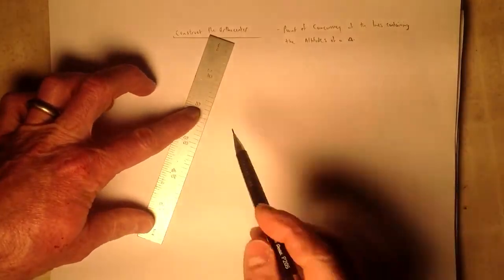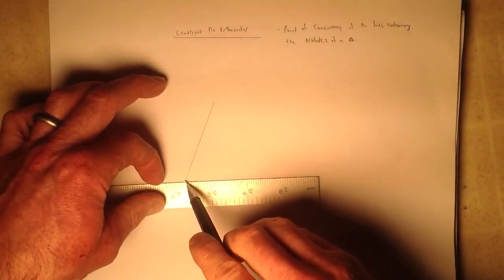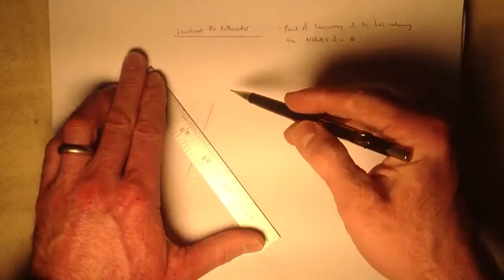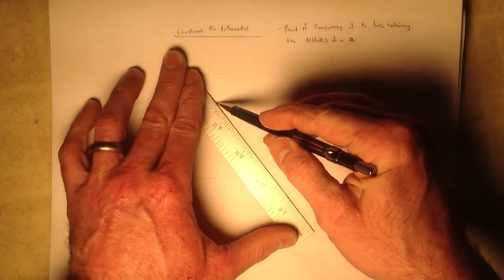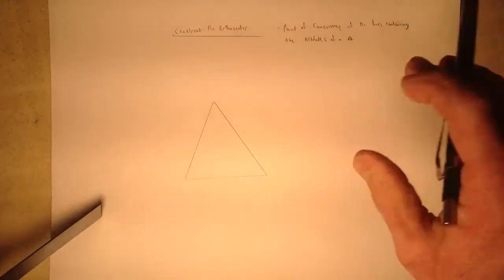To do that, we'll just start with a random triangle here, and it will be an acute triangle. There we go.